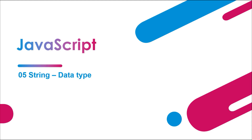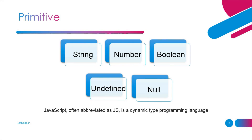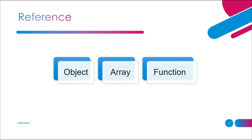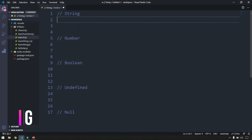In JavaScript we have primitive and reference data types. In primitive we have string, number, boolean, undefined, and null. Whereas in reference — also known as composite data type — we have objects, arrays, and functions.